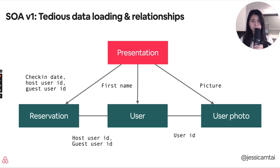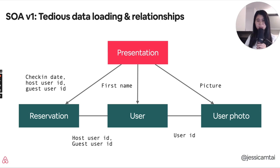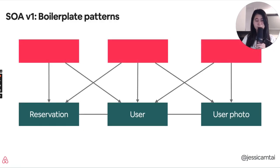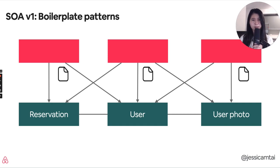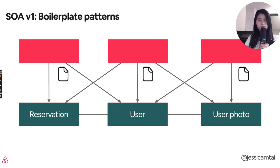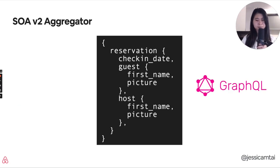However, it was not natural to represent this type of multi-entity query with a single Thrift query — all our services in SOA v1 were using Thrift APIs. So instead, we had many presentation services calling many other data entities in different combinations, but it was a lot of boilerplate to fetch this data. There was some light business logic applied on top, but we were recognizing that our presentation services had a lot of similar patterns where they wanted information from multiple entities.